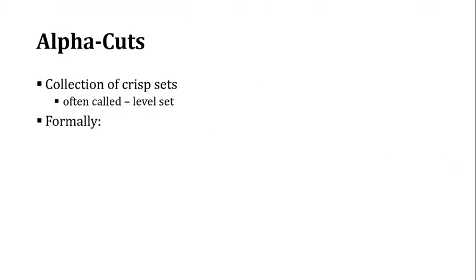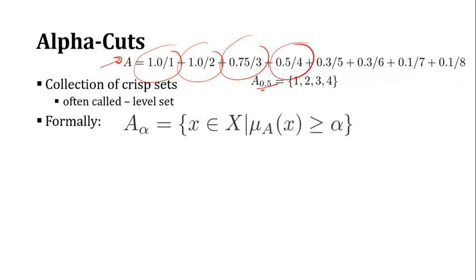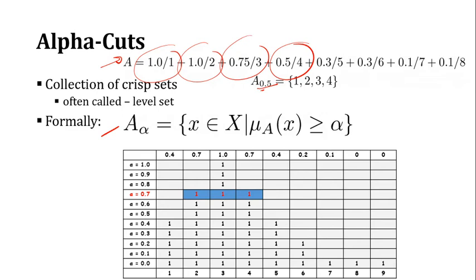One important principle of fuzzy sets is called the alpha cut. For example, if A is a fuzzy set and we find the alpha cut at 0.5, we consider only those elements whose membership function value is equal to or greater than 0.5. Here is another example: if alpha cut is 0.7, you consider elements 2, 3, and 4. If alpha cut is 0.4, then you consider elements 1 to 5, because only that portion satisfies the condition.